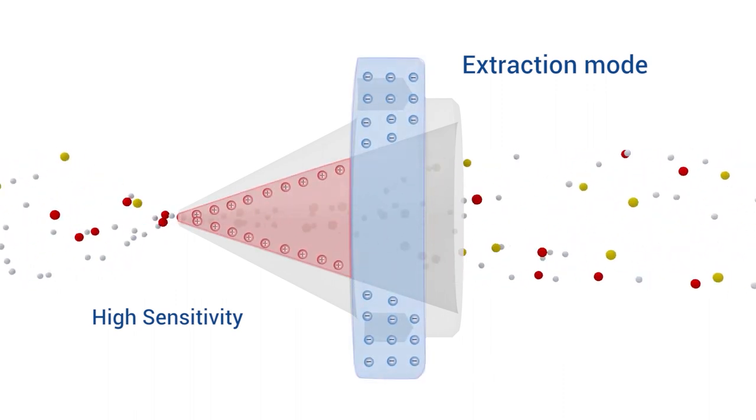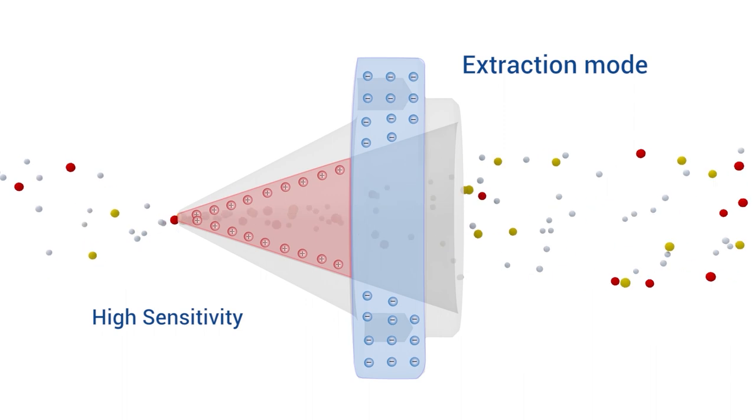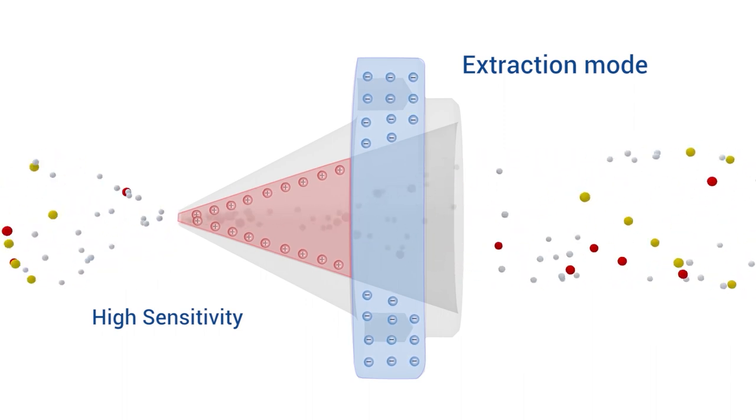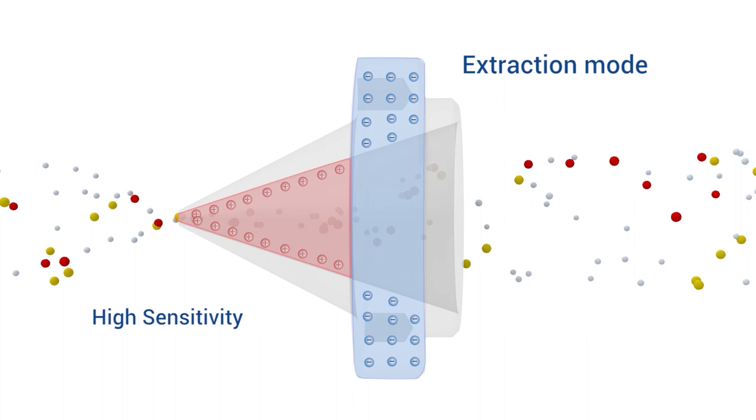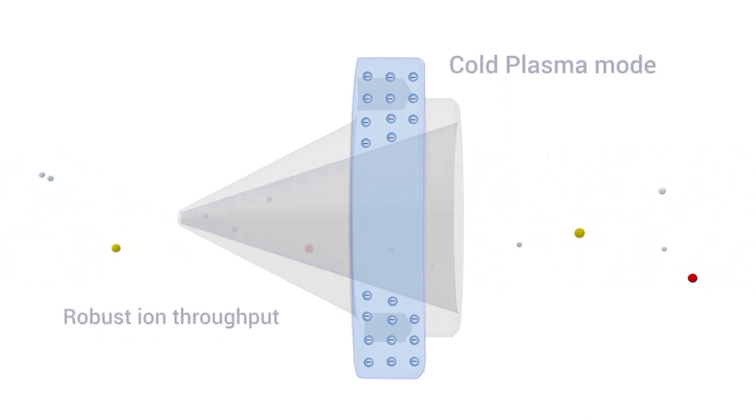Extraction and cold plasma modes help eliminate space charge effects by accelerating positively charged ions through the interface with minimal expansion, then focusing them before they enter the ion optics. This produces the most tightly defined ion beam in the industry, dramatically improving sensitivity.